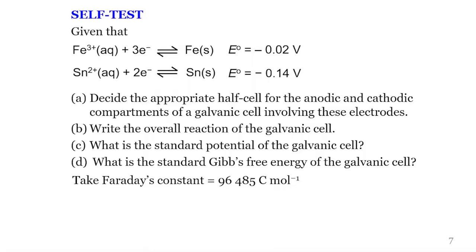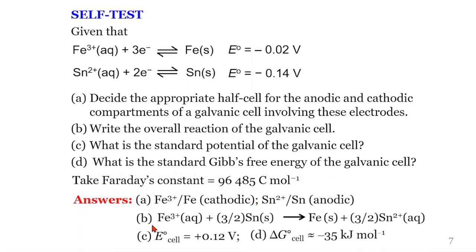Now you can test yourself. Given that the standard reduction potential for iron is negative 0.44 volts and that for tin is negative 0.14 volts, decide the appropriate half cell for the anodic and cathode compartments of the galvanic cell involving these electrodes. Write the overall reaction of the galvanic cell. What is the standard potential of the galvanic cell? What is the standard Gibbs free energy of the galvanic cell? Take Faraday's constant to be equal to 96,485 coulombs per mole. It's the same set of questions just that I have changed the half cells. So if you follow the previous example and work this properly, you should obtain these to be your answers.